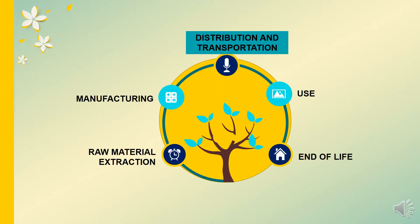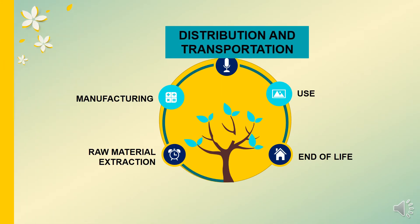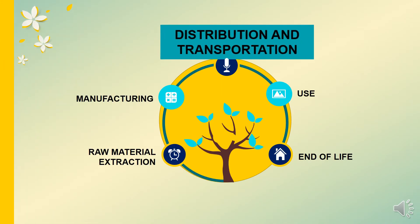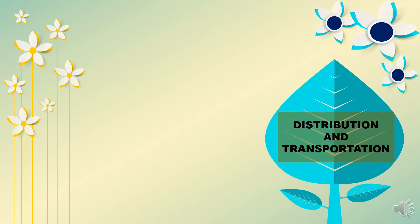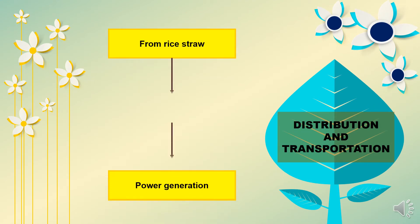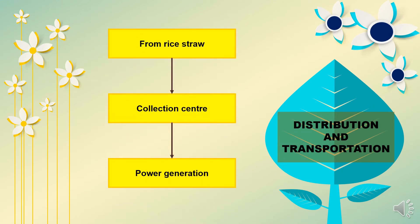For the third stage, distribution and transportation — in this stage, the paddy will be collected from the rice straw to the collection center to be processed. And then from the collection center, it will go to the power generation facility.